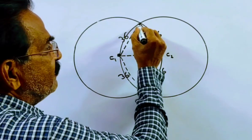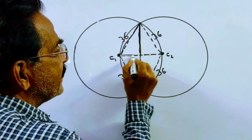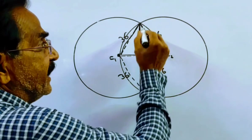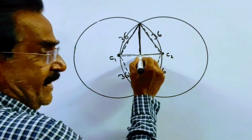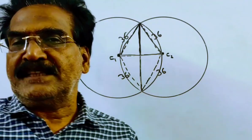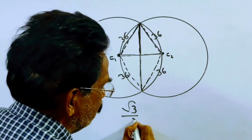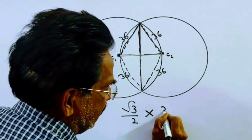This is an equilateral triangle. This is the height of the triangle. We know the height of an equilateral triangle is root 3 by 2 times A, which is root 3 by 2 times 36.